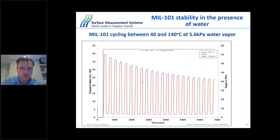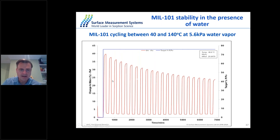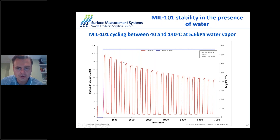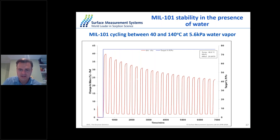A similar cycling study using MIL-101 shows different behavior: keeping water pressure constant at 5.6 kPa and varying temperature between 14 and 140 degrees, the adsorption capacity decreases with increasing number of cycles after 20 cycles. This is one of the reasons why zeolites are still more widely used at industrial scale — their adsorption capacity does not change with repeated adsorption cycles.